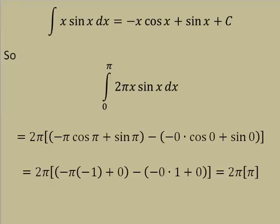Cos(π) is negative 1, sin(π) is 0. Cos(0) is 1, sin(0) is 0. And when the dust settles, we get 2π² cubic units.